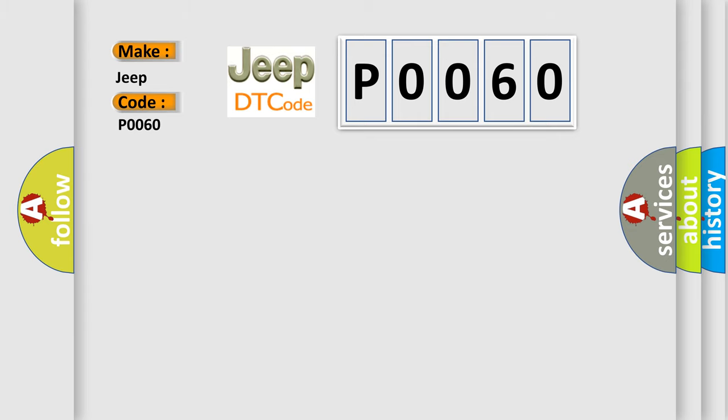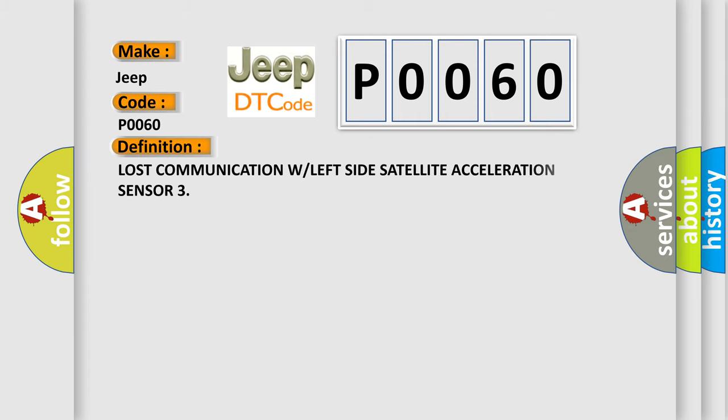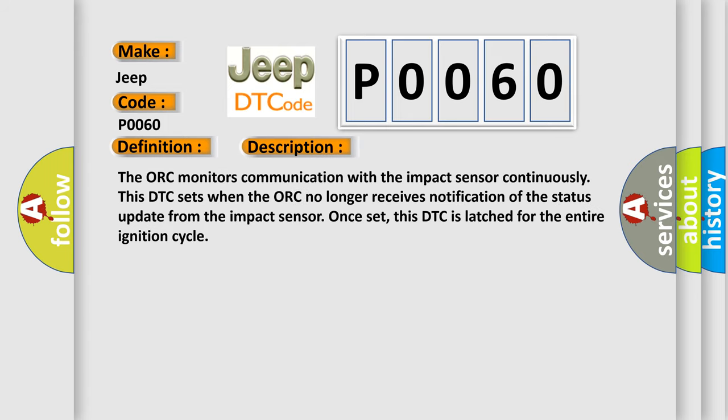The basic definition is: Lost communication with the left side satellite acceleration sensor. The ACM monitors communication with the impact sensor continuously. This DTC sets when the ACM no longer receives notification of the status update from the impact sensor. Once set, this DTC is latched for the entire ignition cycle.